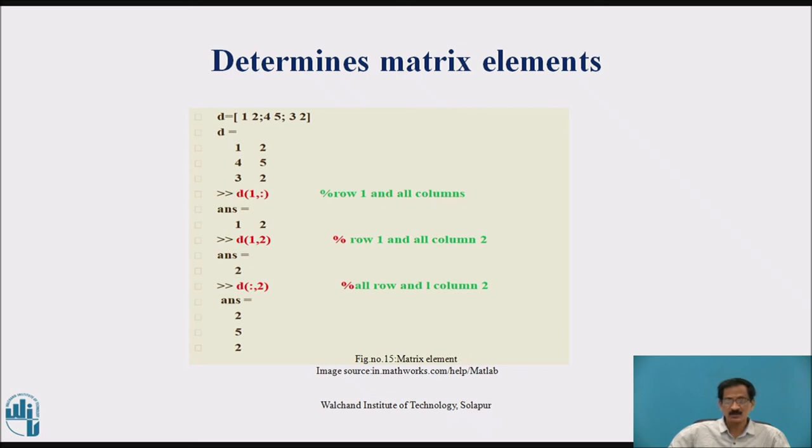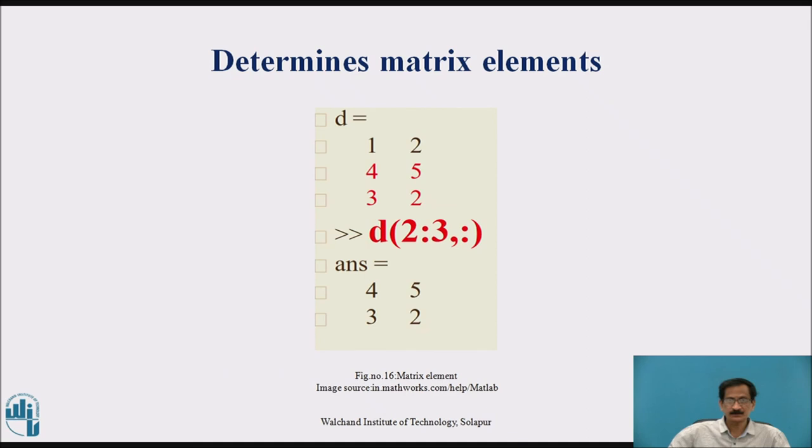Similarly, d 1 comma 2 will select row 1 and column 2 element. The answer is 2. Similarly, d into round bracket colon comma 2 will select all the values of the row from column number 2. It will be 2, 5, 2. Determine matrix element d is equal to 1, 2, 4, 5, 3, 2. D 2 colon 3.